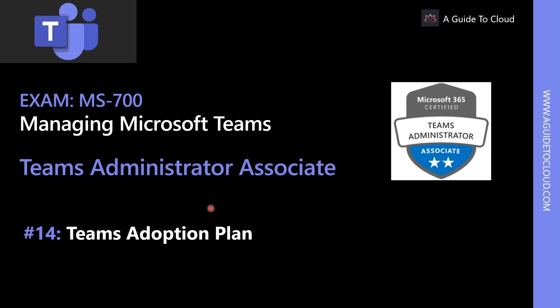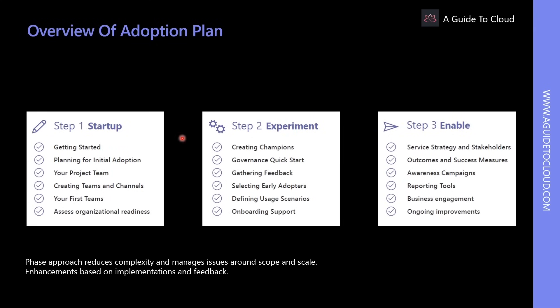The Teams adoption plan involves high-level steps organizations should pursue to drive positive user adoption. The first rule of successful adoption is to create a dynamic team comprised of key stakeholders who can drive and affect change in others. The team should consist of committed individuals representing a cross-section of your organization, including key stakeholder roles: an executive sponsor, service owners, IT professionals, and champions.